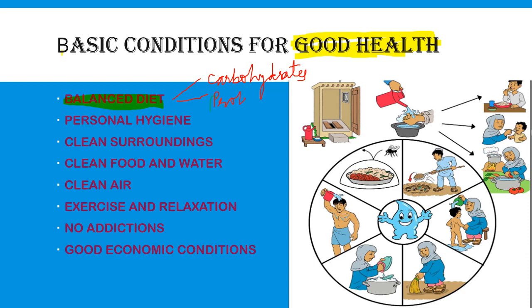Proteins bhi hone chahiye aapke diet ke andar, aapke khane ke andar. Proteins na ho aisa nahi hai. Dal honi chahiye, paneer hona chahiye, mushrooms hone chahiye, beans hone chahiye — in sab ke andar protein content bahut acha hota hai. Next one — vitamins. Vitamins are necessary for your body; koi deficiency nahi honi chahiye. Sare vitamins hone chahiye. Kuch vitamins aapke vision ke liye zaroori hain, aur bahut sare aapki body building ke liye. Proteins, carbohydrates aur vitamins ki bahut zaroori hain.